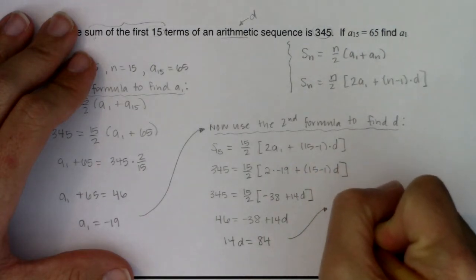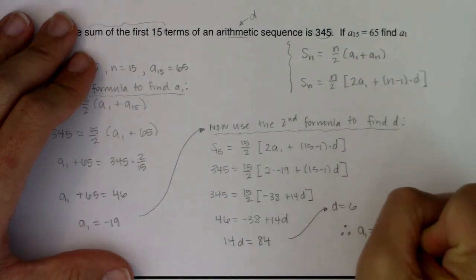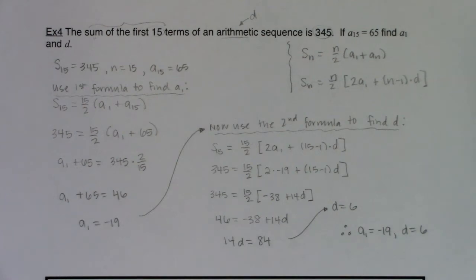So there we go, d is equal to 6. So my answers are, well I found a sub 1, it was negative 19, and I found d, it was 6. So with that we're going to end our look at arithmetic series. We're going to move on to finite geometric series, and I will see you in a bit.